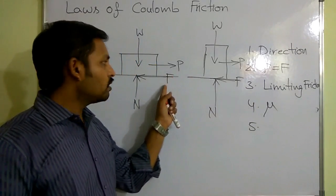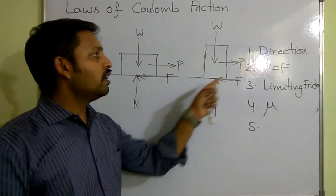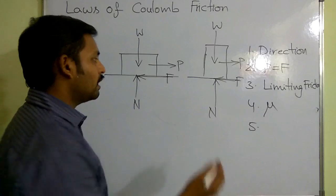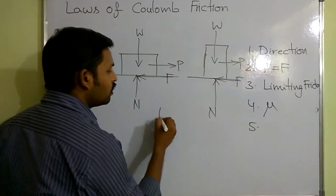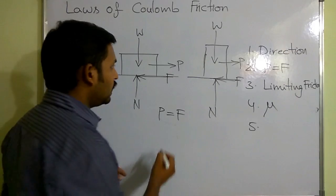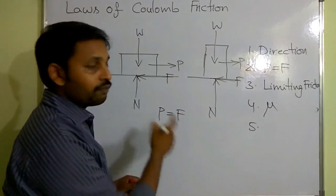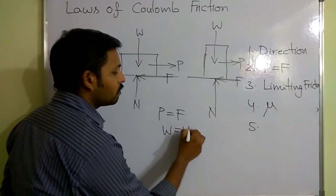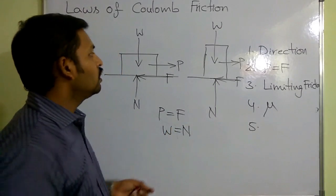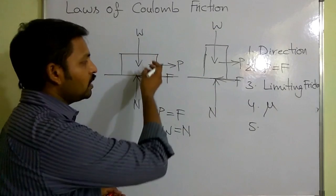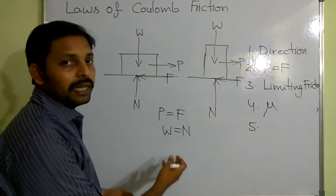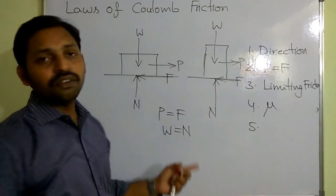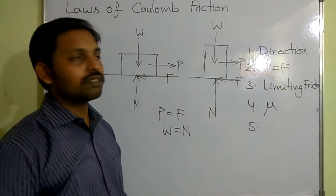If P is equal to 10 N, then F is equal to 10 N for the horizontal case. Here also, if P is equal to 10 N, F is equal to 10 N for the vertical case. When I apply sigma Fx equal to zero for both figures, I get P equal to F. And when I apply sigma Fy equal to zero for both figures, I get W equal to N. There is no change. If weight is equal to 100 N, then normal reaction will be equal to 100 N. If applied force is equal to 10 N, frictional force is equal to 10 N.